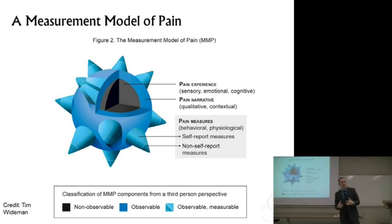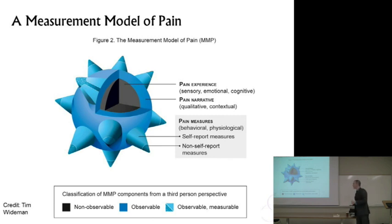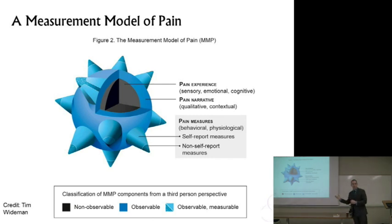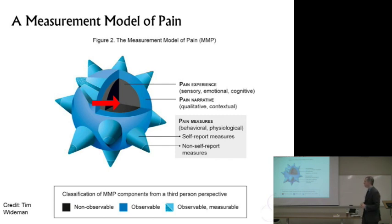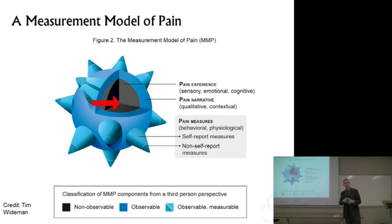What we're doing here is we're proposing a new measurement model of pain. What we've got here in this sort of spiky-looking ball is a pain experience that's kind of the core of this ball that we really can't see. It's kind of that black box area. We cannot, as of right now, accurately capture that pain experience.